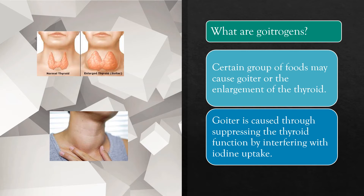The thyroid gland normally produces thyroid hormones — thyroxine and triiodothyronine — which are composed of iodine. These hormones regulate the body's metabolic rate, heart function, digestion, muscle control, brain development, and maintenance of bones.